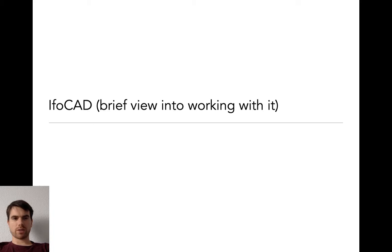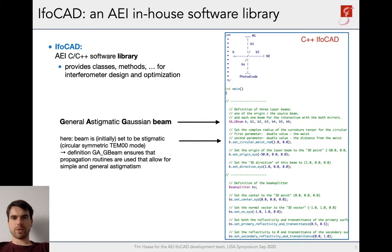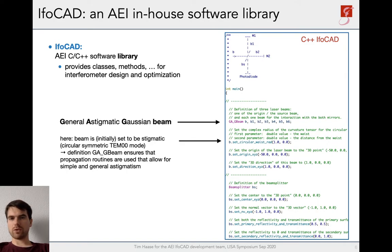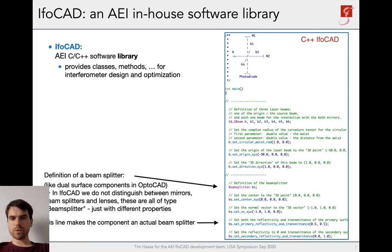Let me show you how an IFOCUT project would look like. This is example code for a simple Michelson interferometer. First, we declare all the general astigmatic Gaussian beam fragments. As we do manual beam tracing, we have to have a beam for each part of the beam path — auto-tracing would obviously do the job for you. Then we set the properties of the origin beam and continue with the beam splitter. We position it and set the reflectivity and transmittance to 0.5, which makes it a beam splitter. We also set the reflectivity and transmittance for the secondary surface.